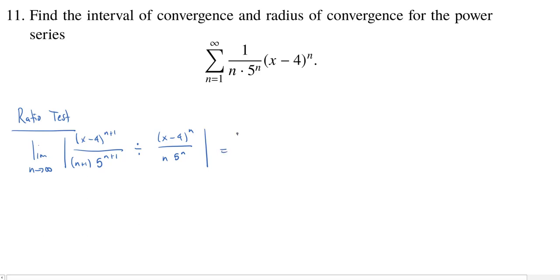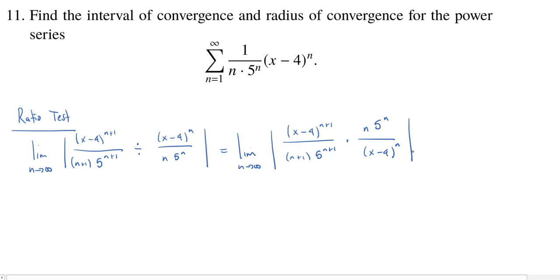Since we're dividing by a fraction we can instead multiply by the reciprocal. So we copy (x minus 4) to the n+1 over (n+1) times 5 to the n+1, times n times 5 to the n over (x minus 4) to the n. Looking diagonally, I have n+1 copies of (x minus 4) in the numerator and n copies in the denominator, so I'll be left with just one copy of (x minus 4) in the numerator.